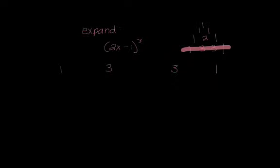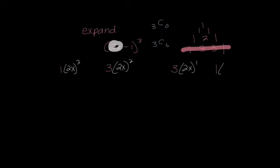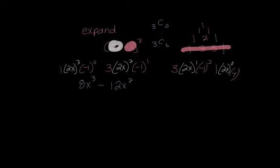We could also have found that by doing 3 combination 0 all the way up to 3 combination 3. And we would get those same numbers in our calculator. Next I'm going to take this first term, 2x. And I'm going to take it to the 3rd power, and then to the 2nd power, to the 1st power, and then to the 0 power. Then I'm going to take my negative 1 and take that to the 0, 1, 2, and 3. Now let's simplify. I get 8x cubed minus 2 squared is 4 times 3 is 12x squared. It became negative because of that negative 1. Then I have 6x, and then lastly minus 1.